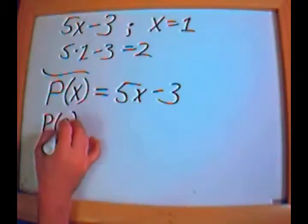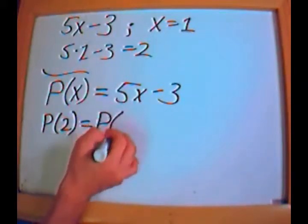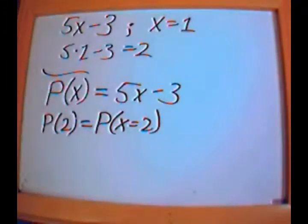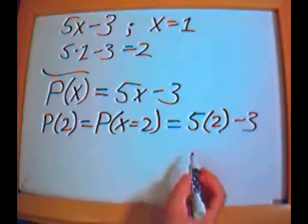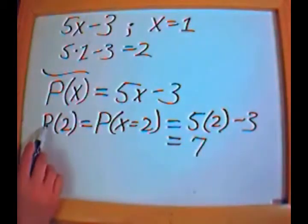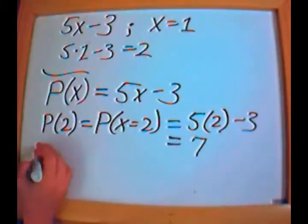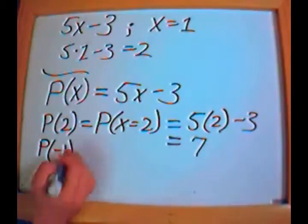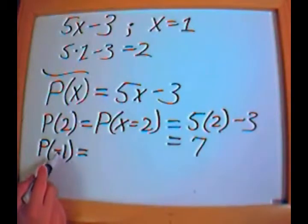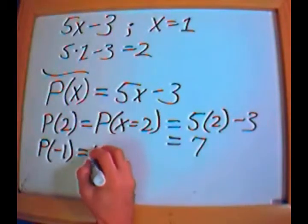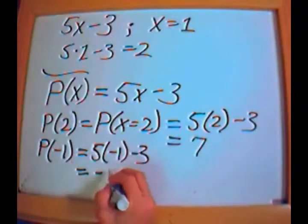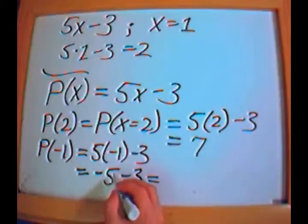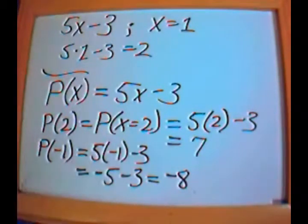So what if I have p of 2? This means I'm evaluating p at x equals 2, which is simply 5 times 2 minus 3. 5 times 2 is 10, minus 3 is 7. So p of 2 equals 7. Let's say we have p of negative 1. I plug negative 1 into the right-hand side: 5 times negative 1 minus 3, which is negative 5 minus 3, equals negative 8. So p of negative 1 equals negative 8.